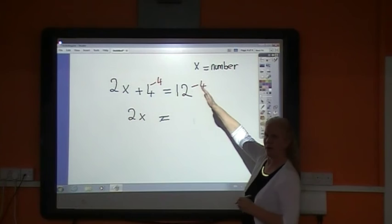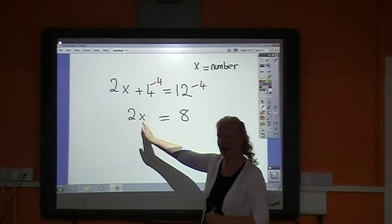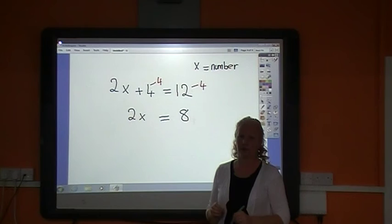I'm not there yet. I haven't got to x equals a number. So I have 2 multiplied by x equals 8. I want to get rid of the multiplied by 2. What's the opposite of multiply? Divide.